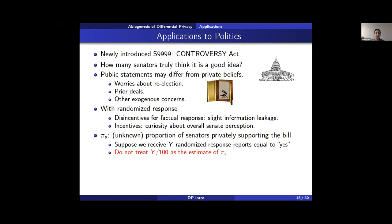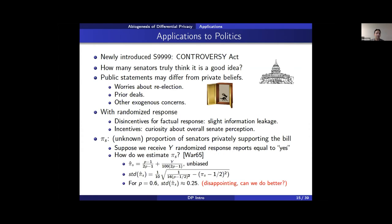The nice thing about randomized response and differential privacy is that you know exactly how the data are randomized, so you can adjust your inference. In the case of randomized response, we can use the appropriate formula to get an unbiased estimate of the proportion of senators privately supporting the bill, and compute the standard deviation of that estimate. Plugging in a privacy parameter of 0.6, the standard deviation is around 0.25 — which, for estimating a proportion between 0 and 1, is unacceptably large.